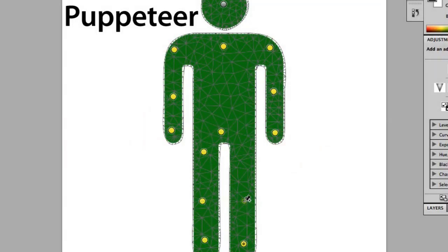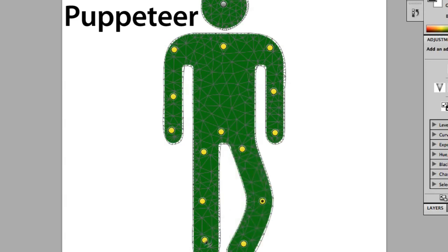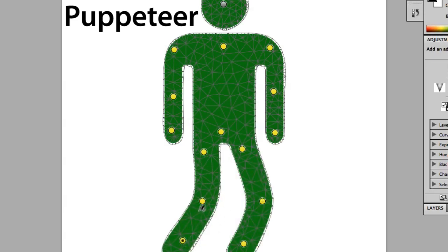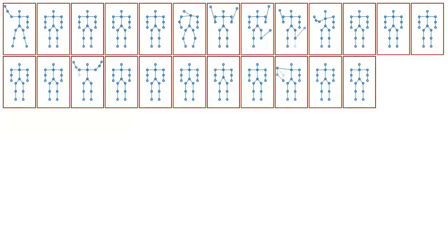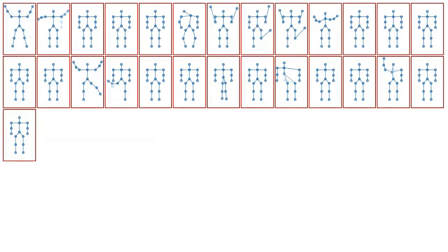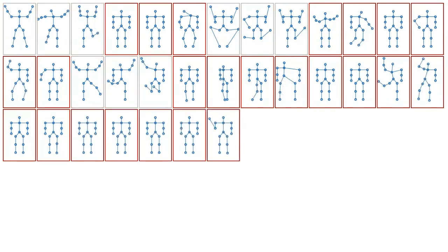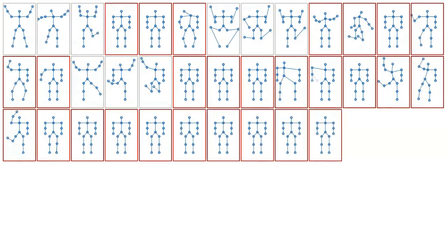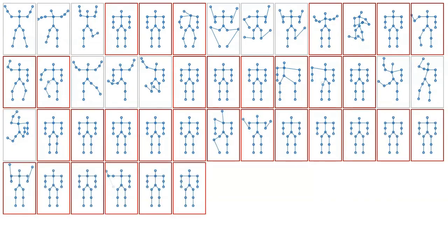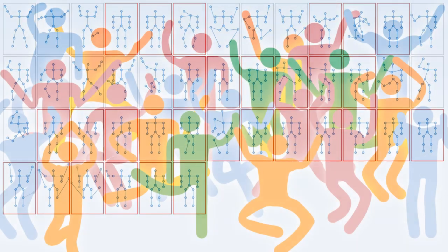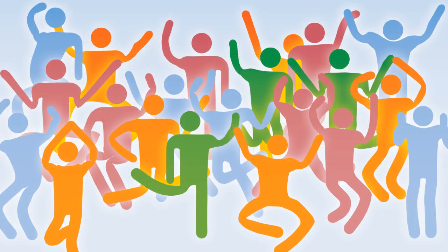Puppeteer uses crowds for creative tasks. Go into Photoshop and add control points to a figure, then ask the crowd to articulate it. You can watch the crowd generate alternatives in real-time, send feedback, and embed the results back into Photoshop. Thank you!